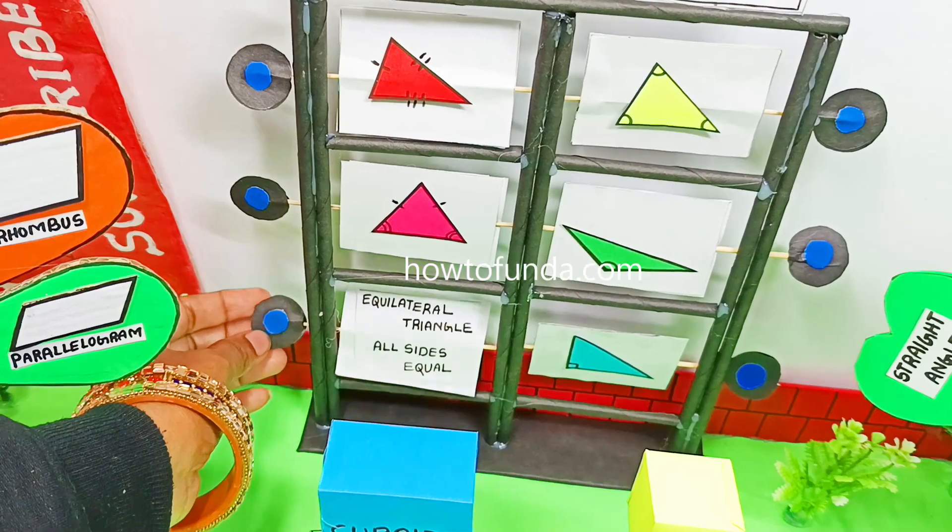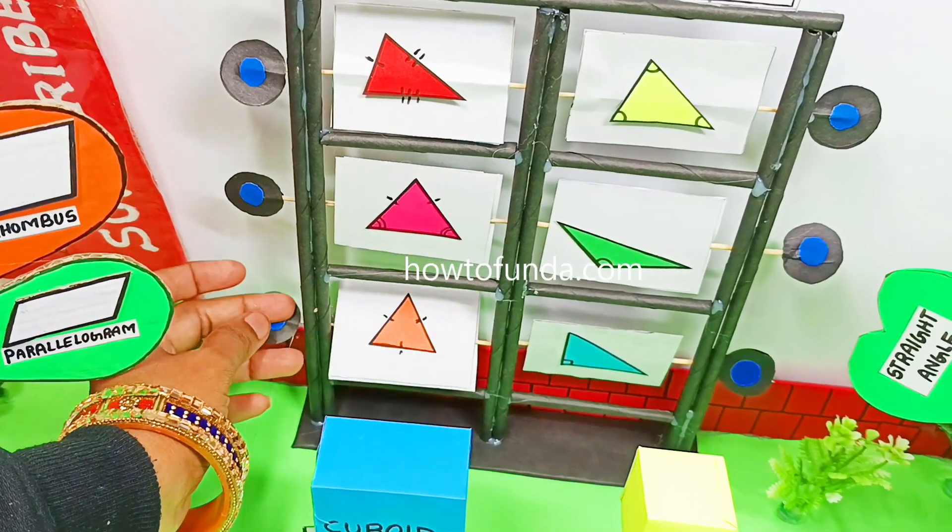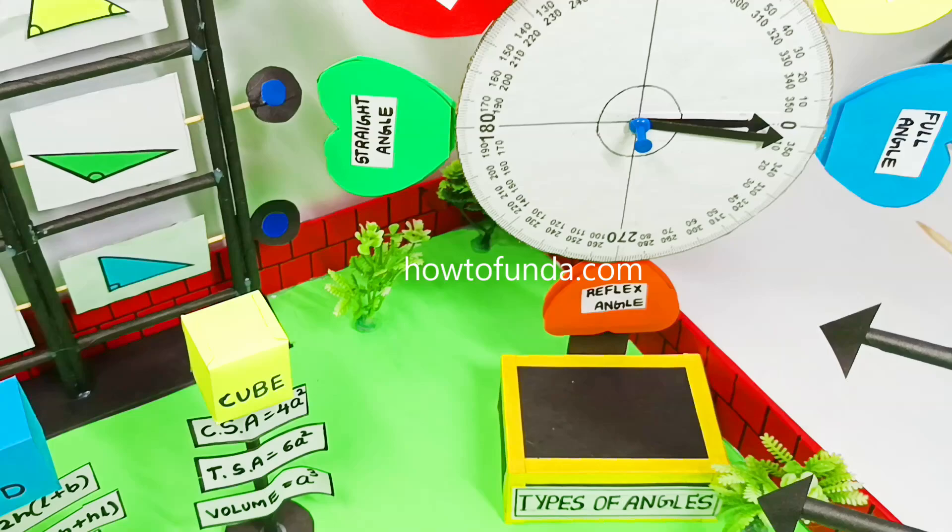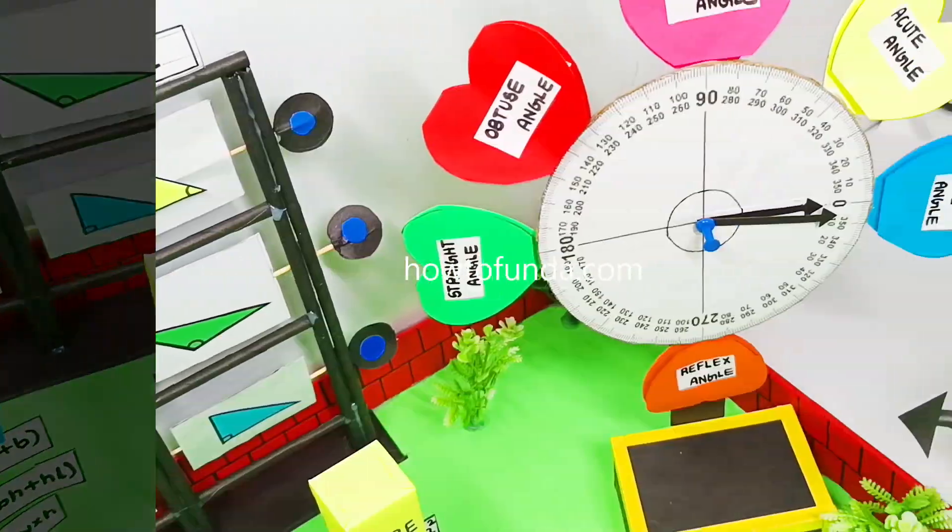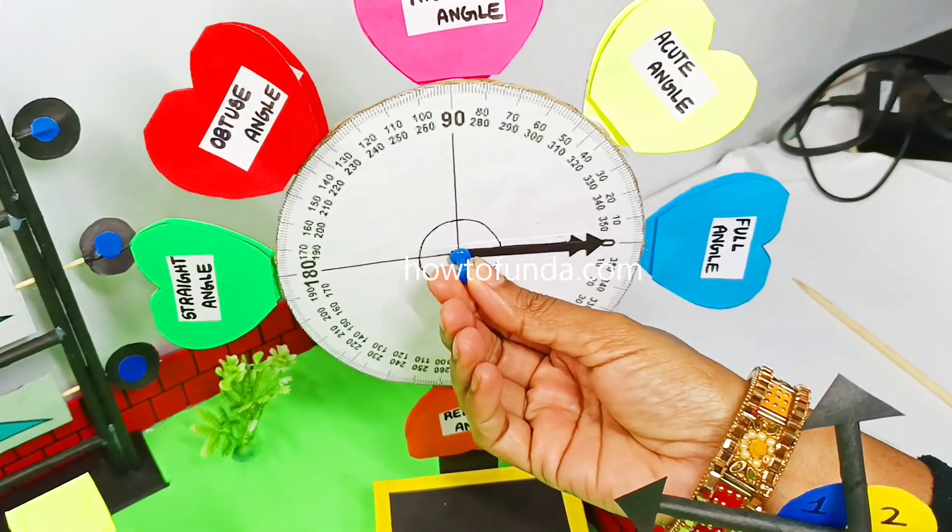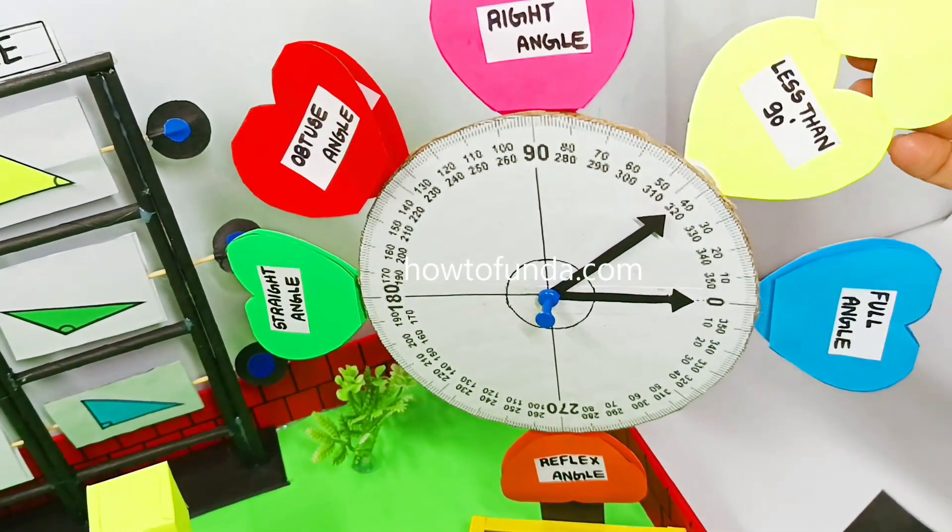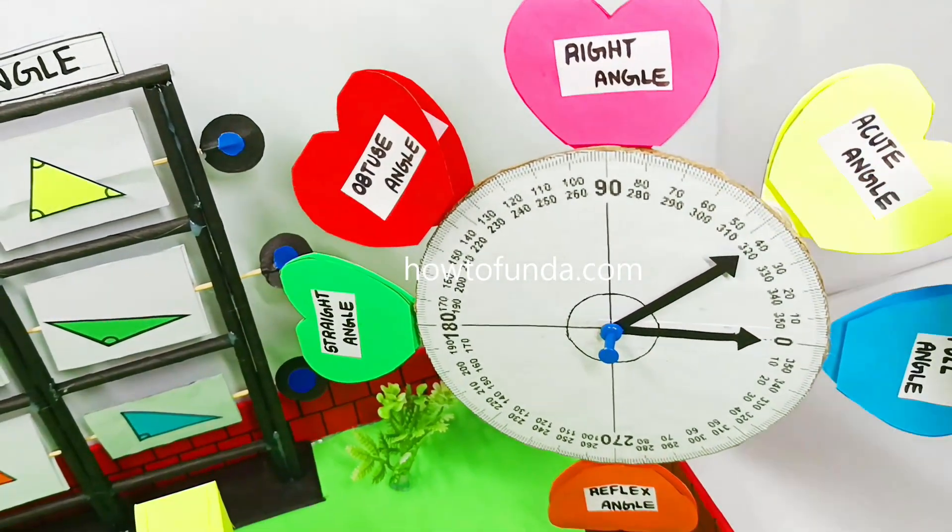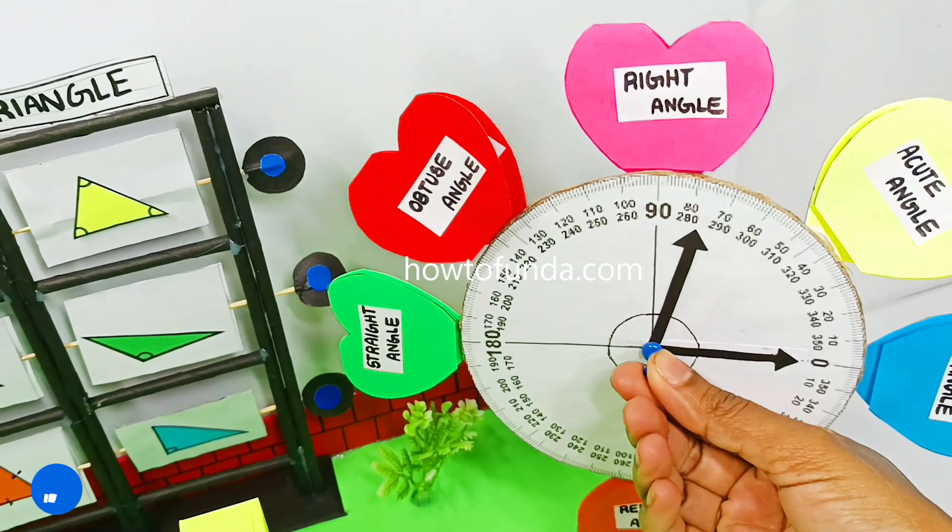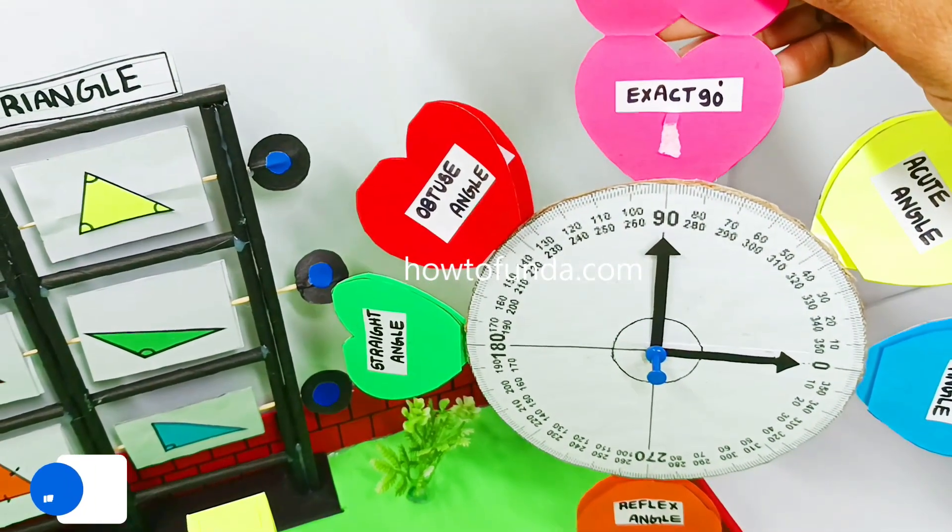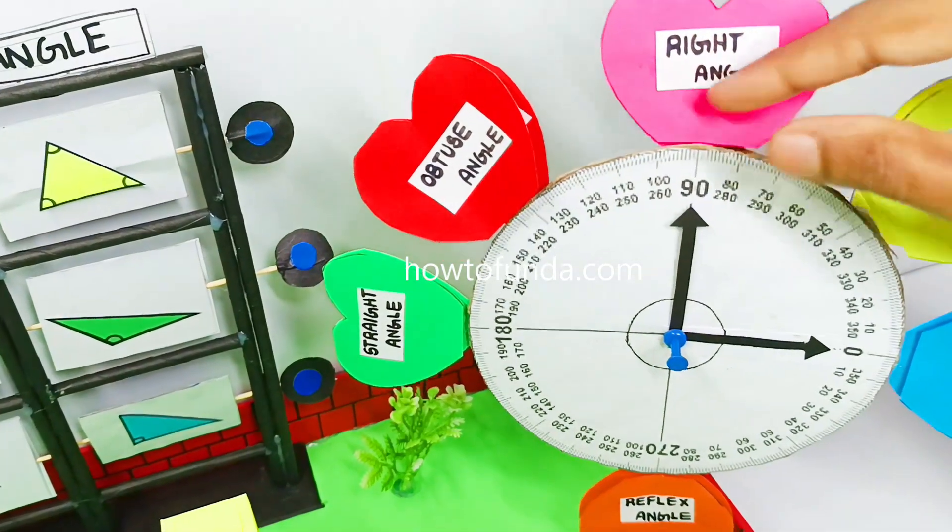The next item available in the park is types of angles. We are depicting various types of angles in this model. One is acute angle which is less than 90 degrees. We have right angle which is equal to exactly 90 degrees. And we have obtuse angle which is greater than 90 degrees and less than 180 degrees.